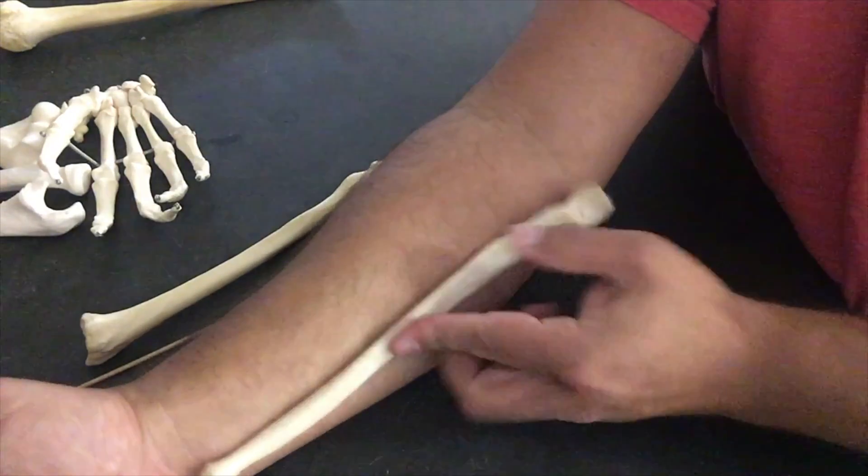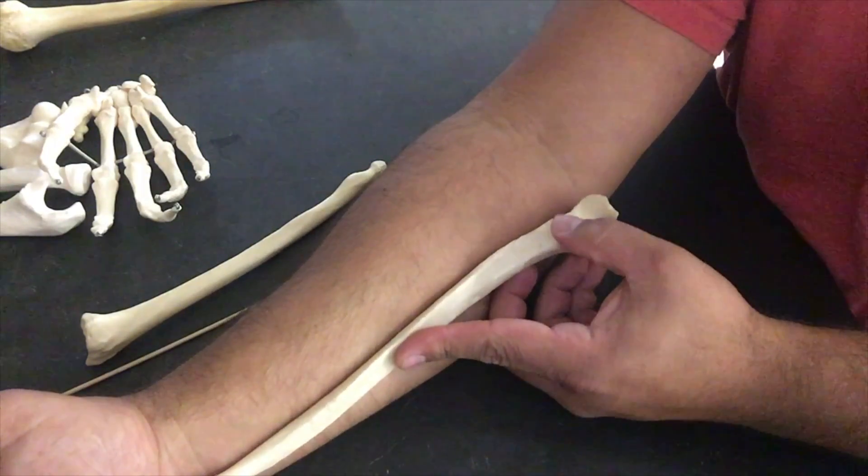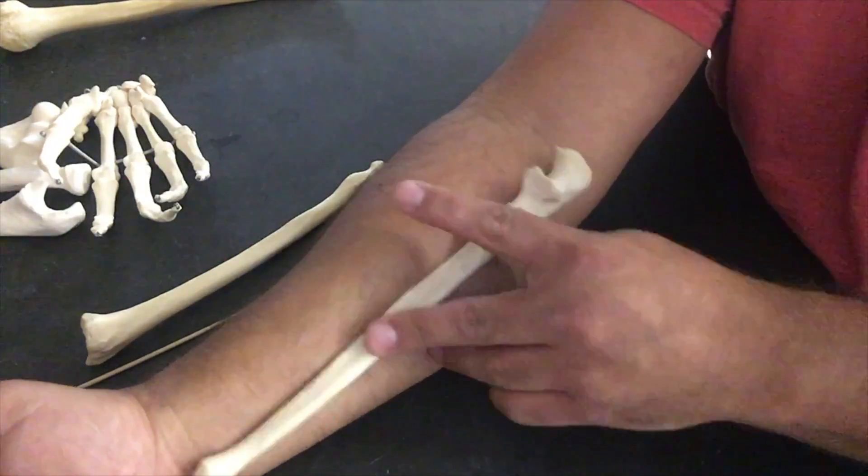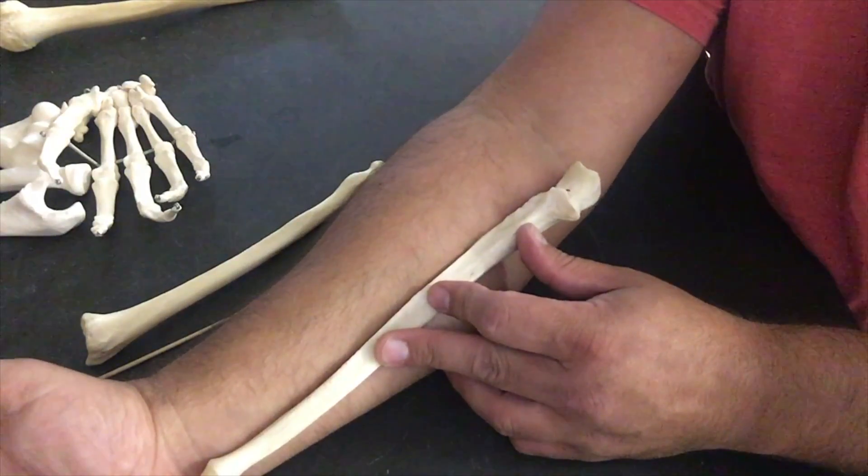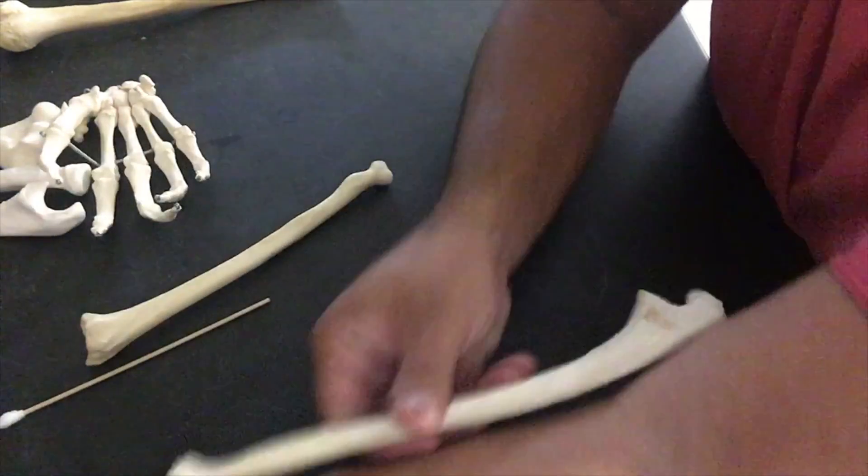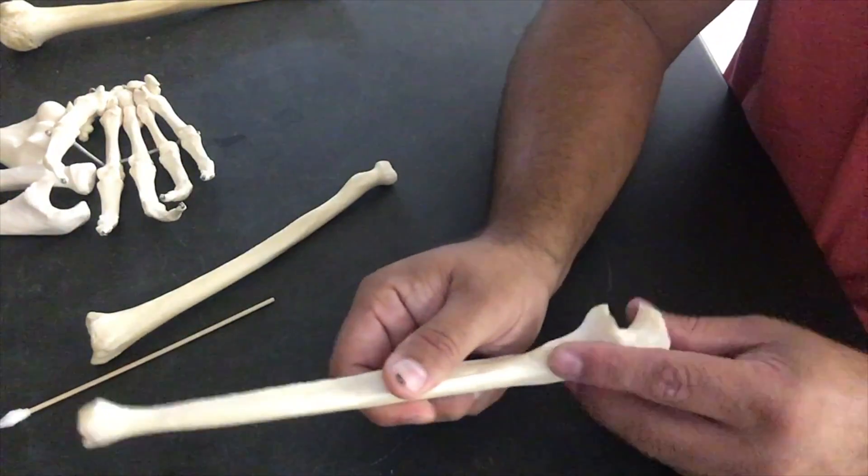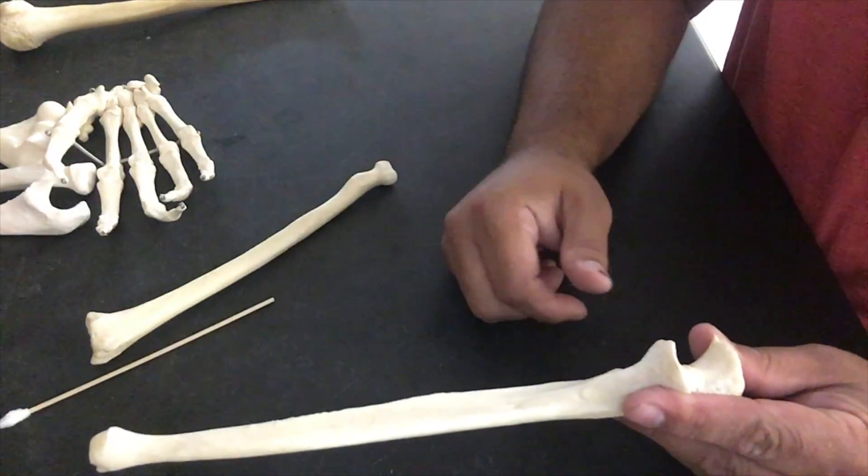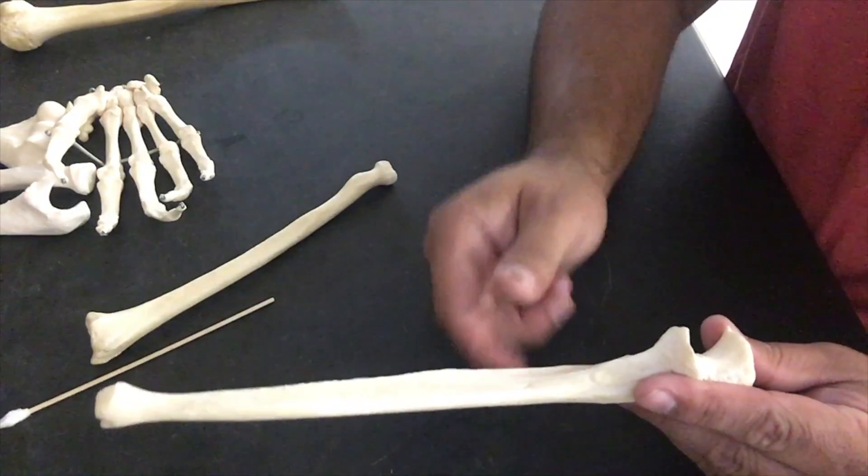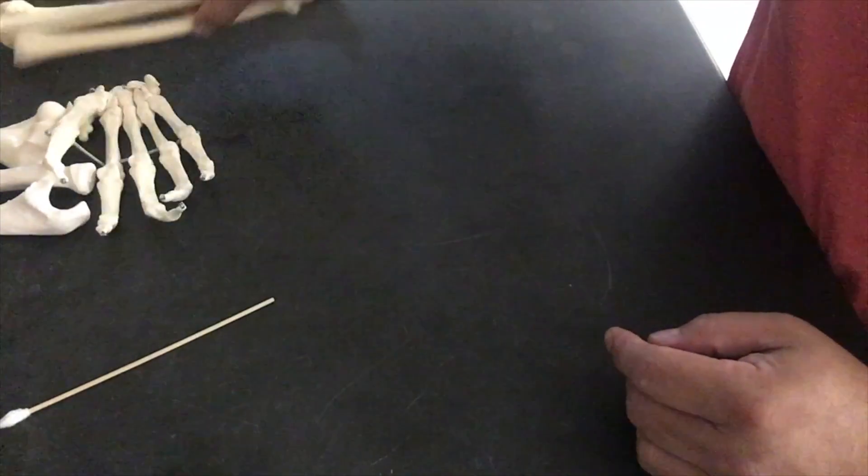Now let's go to the ulna. The same thing holds true—that radial notch up here has to face inward towards that radius. So this is a right ulna. If I try to put it on my left side, that radial notch is no longer facing inward—it's now on the outside facing medial. That is no good. This is not a left ulna.